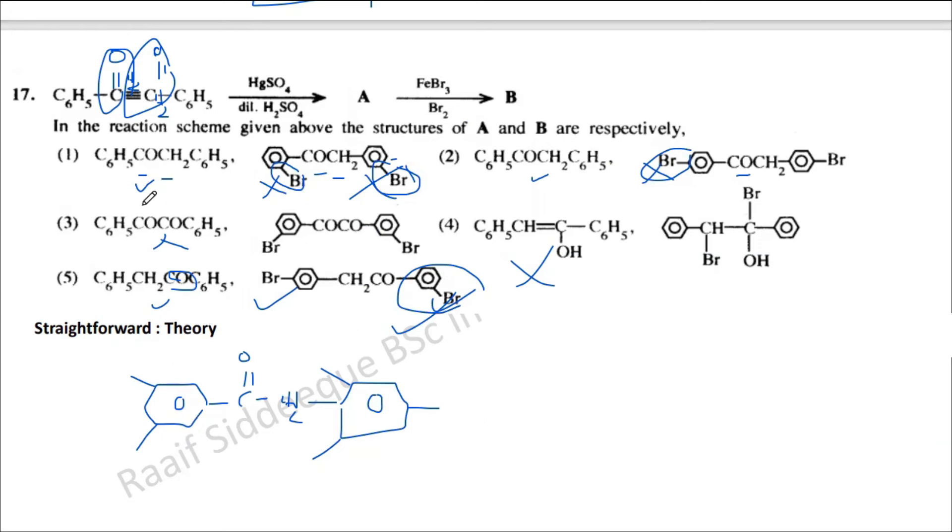So the first thing that you need to identify is this triple bonded carbon does not have any hydrogen. So the carbonyl CO can be formed like this, the first one or the second one. Then after that, you need to consider about the substitution in these two benzene rings. That's all. Okay.